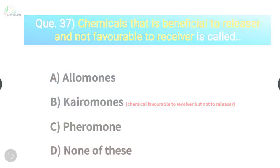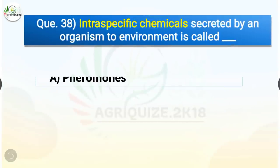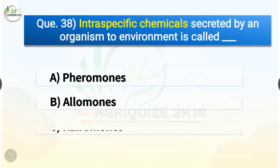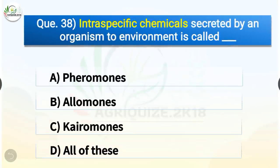Question number 38. Intraspecific chemicals secreted by an organism into the environment are called what? The options are pheromones, allomones, kairomones, or all of these. The correct answer is option A, pheromones. Intraspecific chemicals secreted by an organism into the environment are called pheromones.